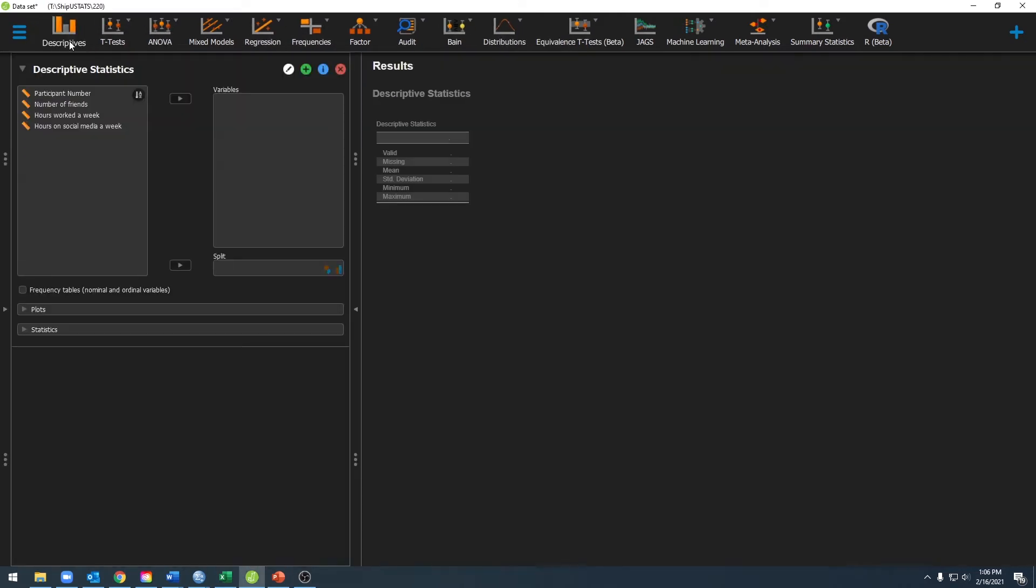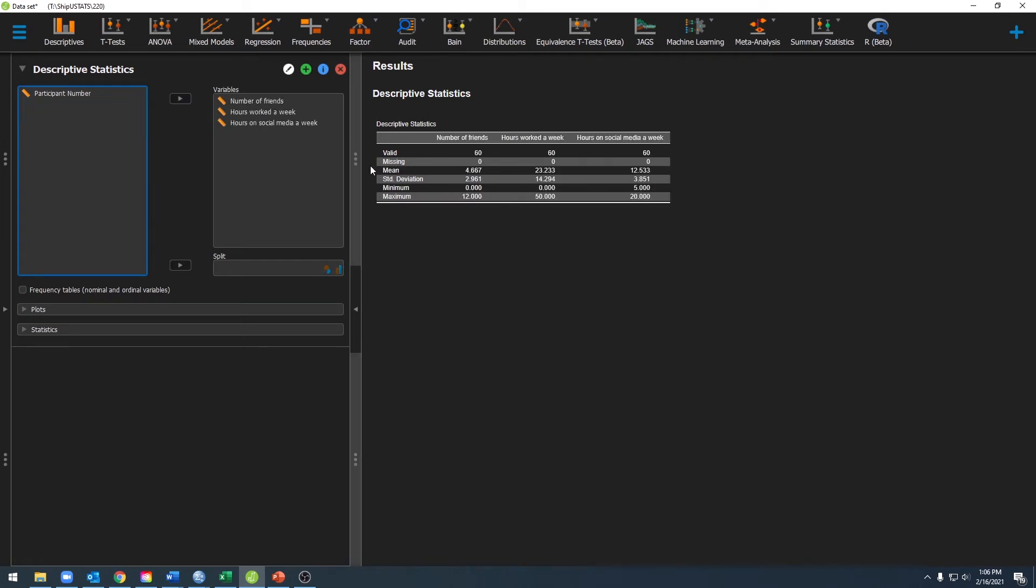And we can go ahead and move over the variables that we want descriptive statistics for. By default, JASP should have selected mean and standard deviations already, and you can see that those are reported in this table over here. If they're not there, you can go ahead and click on statistics, and then go ahead and select mean and standard deviation.